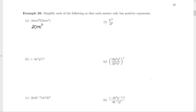n squared times n to the 4th — you have 2 n's here and 4 more here. So if you add up all the n's, you end up with 6 n's.